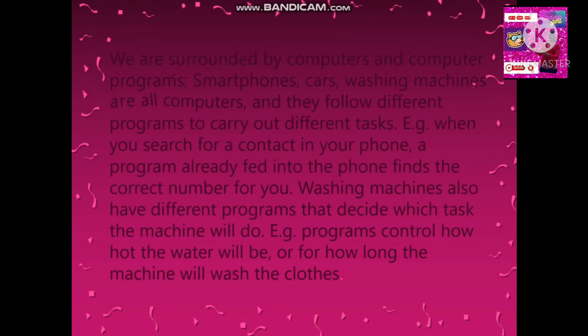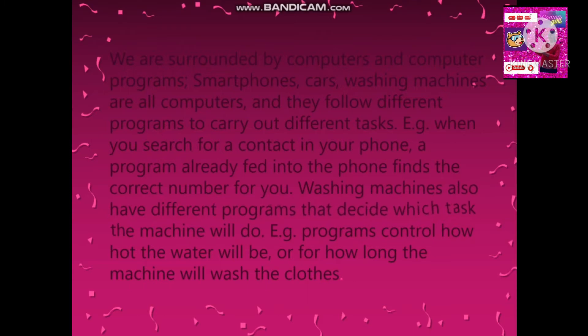We are surrounded by computers and computer programs. Smartphones, cars, and washing machines are all computers and they follow different programs to carry out different tasks. For example, when you search for a contact in your phone, a program already fed into the phone finds the correct number for you. Washing machines also have different programs that decide which task the machine will do — programs control how hot the water will be or for how long the machine will wash the clothes.